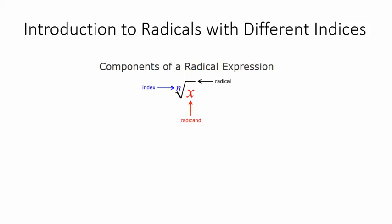In this video we're going to talk about radicals with different indices. So first let's start off with a little vocabulary. Here we have the components of a radical expression: the index, which is this little number written up here just to the upper left of the radical sign, and then we have what's underneath the radical, which is called the radicand.